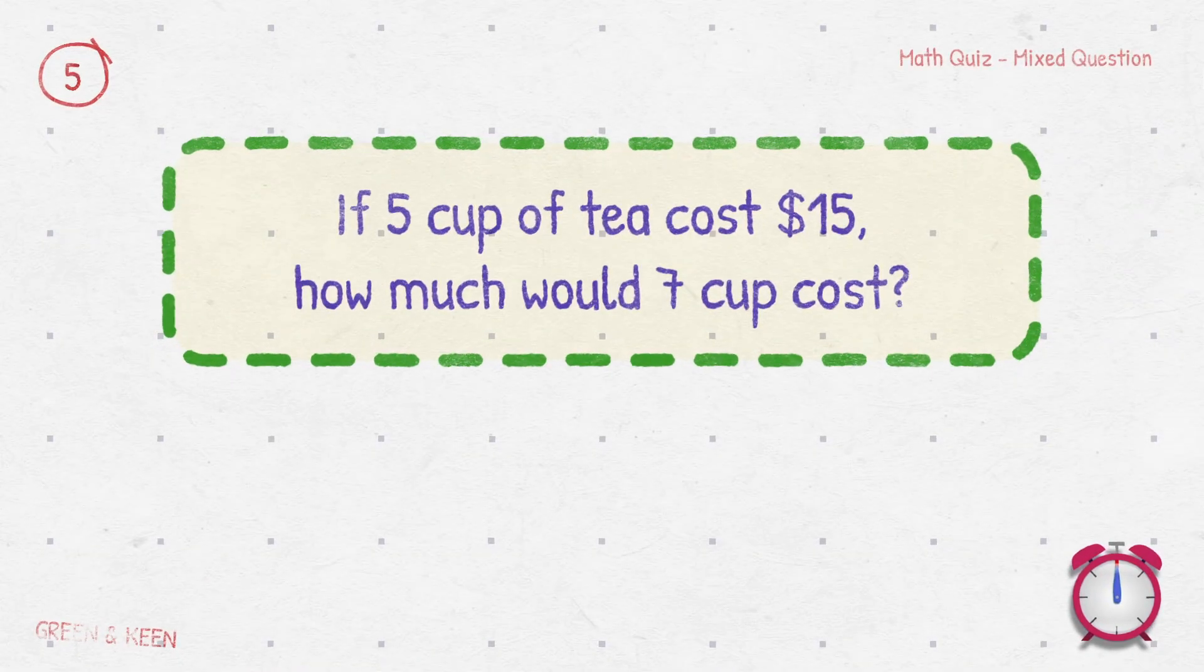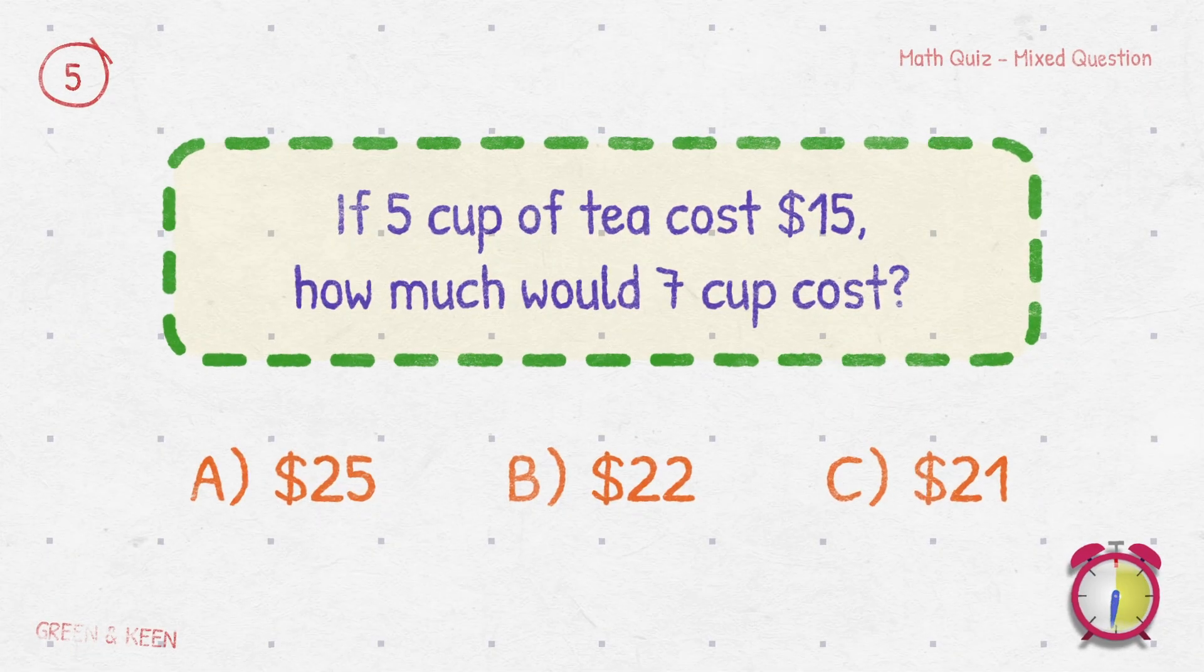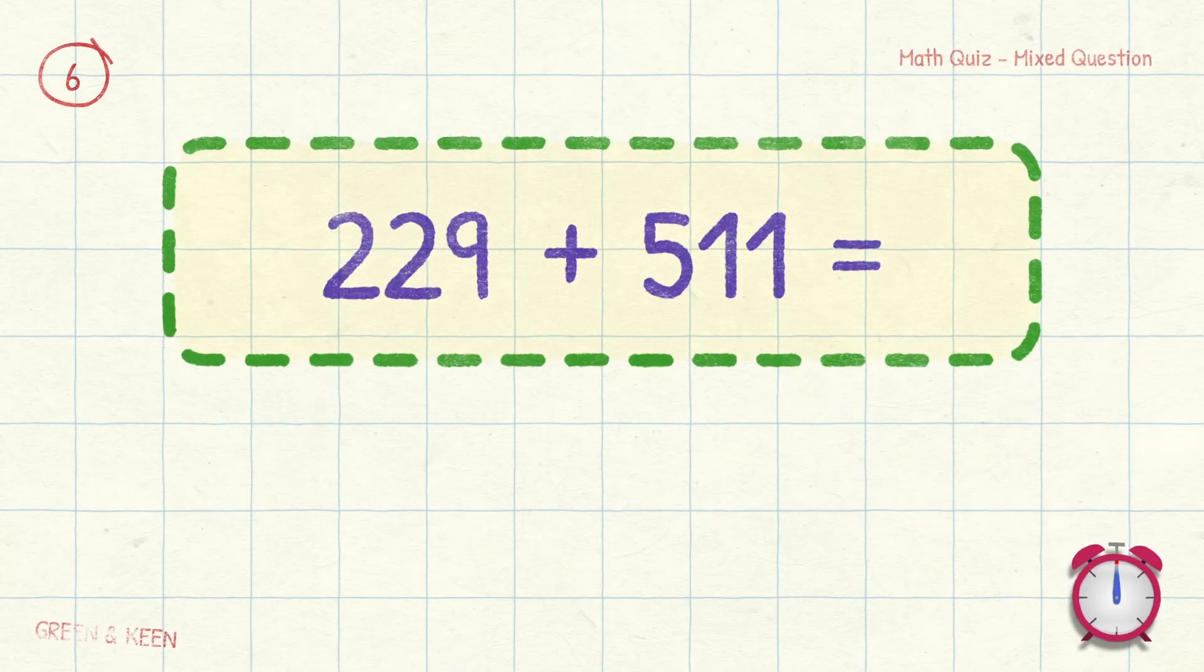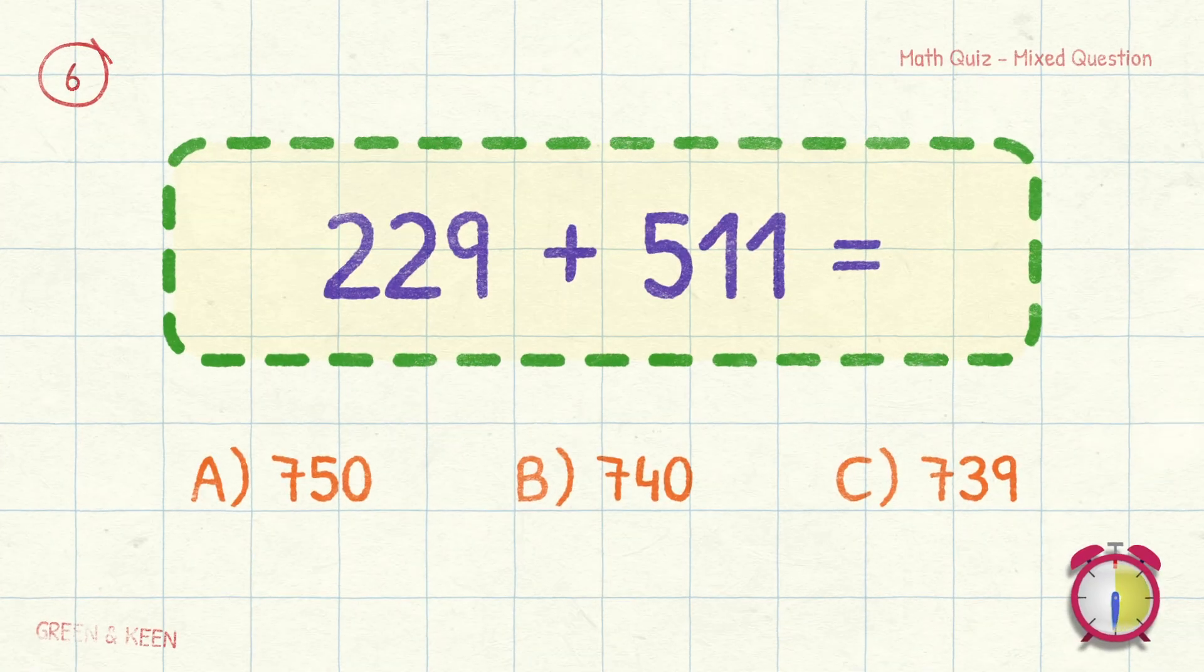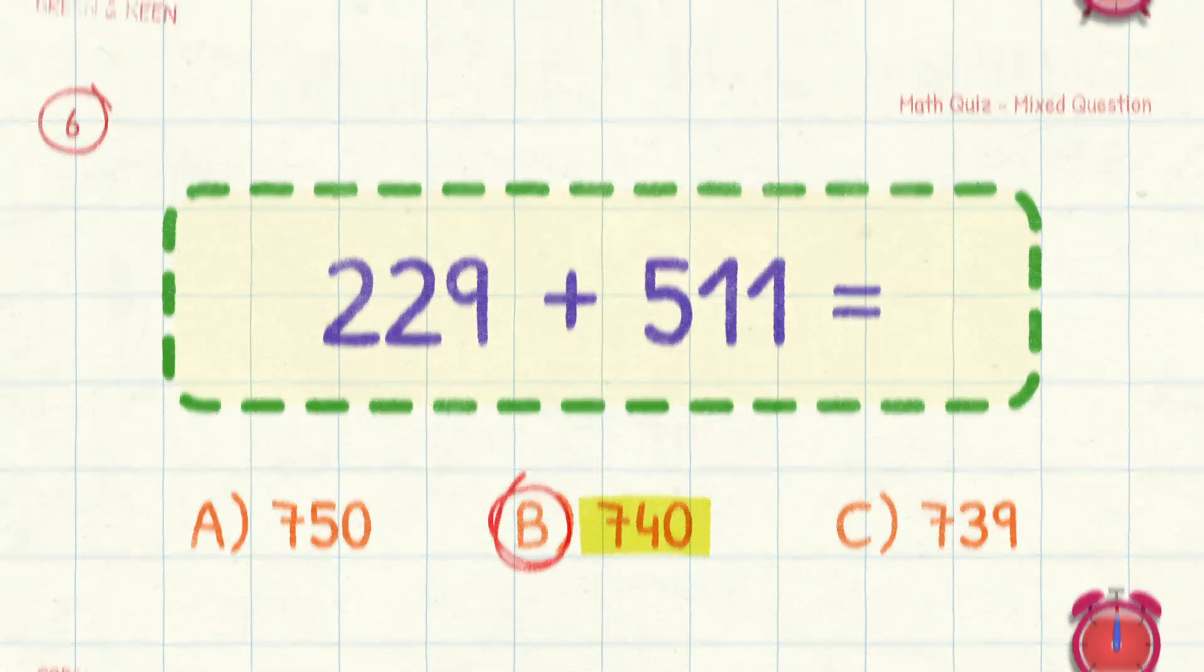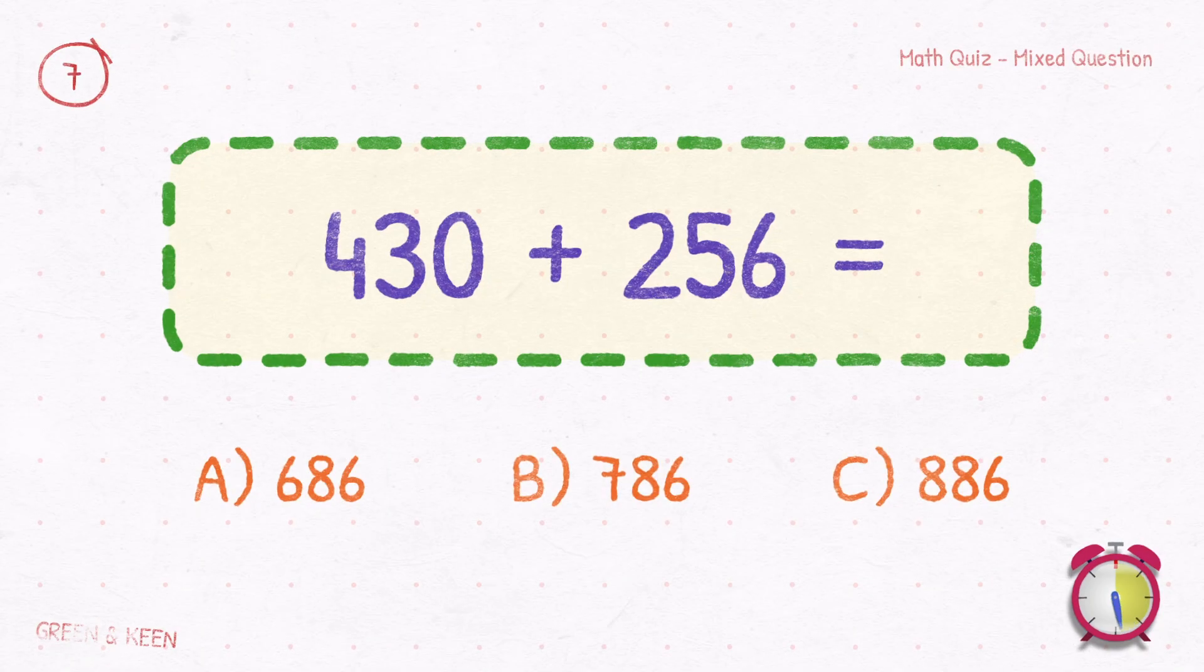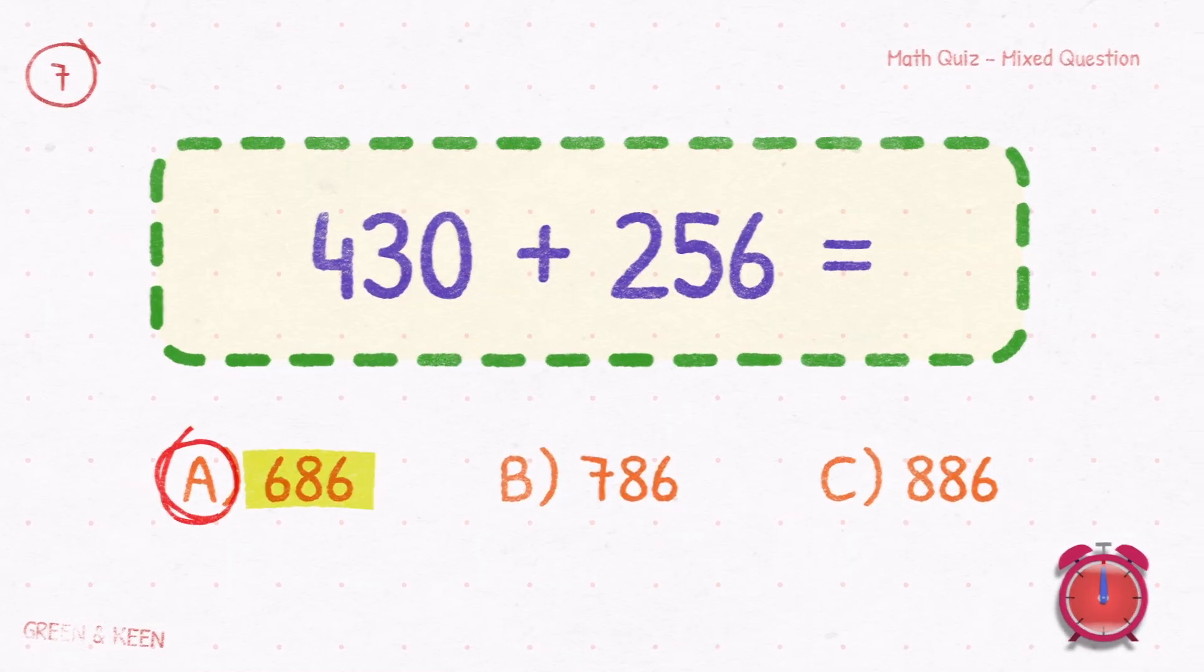If 5 cups of tea cost $15, how much would 7 cups cost? $21. 229 plus 511 equals? The answer is 740. 430 plus 256 equals? The answer is 686.